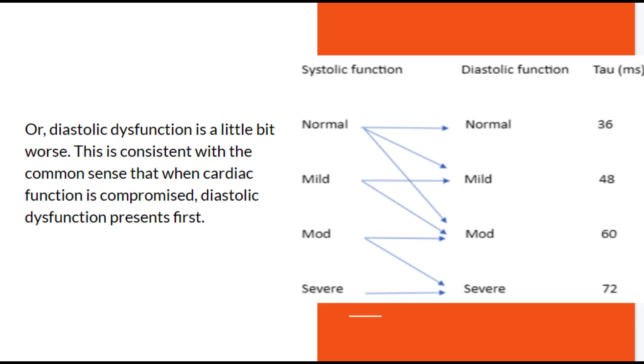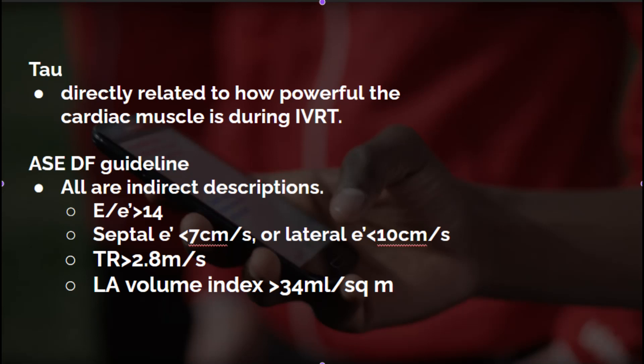According to the ASE diastolic function guideline, some patients with normal systolic function could be diagnosed with severe diastolic dysfunction, or some patients with severe systolic dysfunction could be diagnosed with normal diastolic function. We think those scenarios are debatable. Tau is well accepted as the best index to describe diastolic function because it is directly related to how powerful the cardiac muscle is during early diastole. All the indexes adopted in the ASE guideline are indirect descriptions. Hopefully, tau can be part of the next version of the ASE diastolic function guideline.